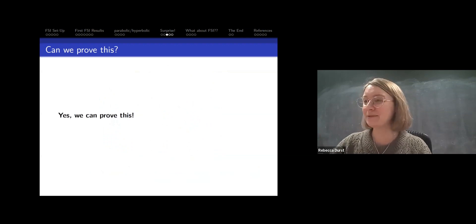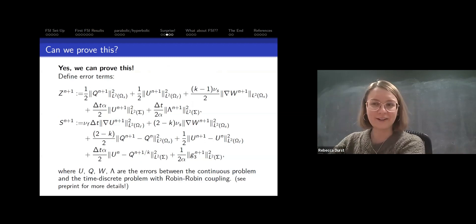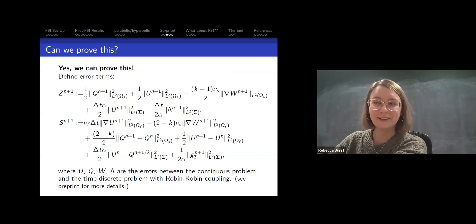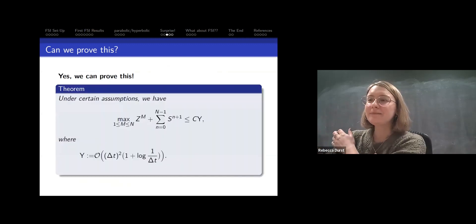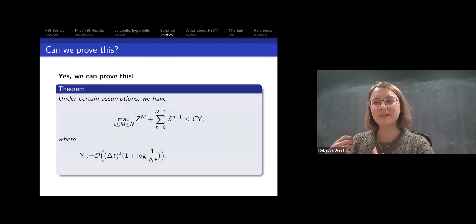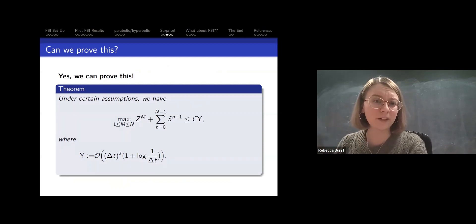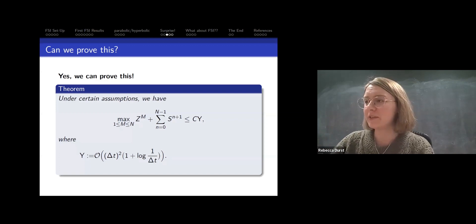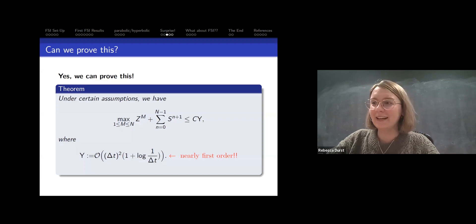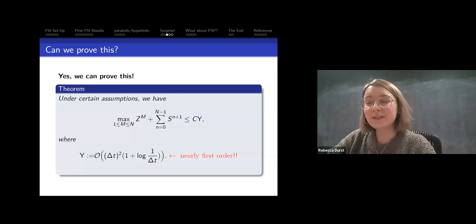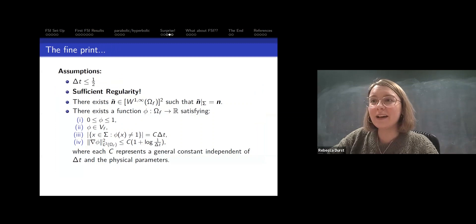We proved it. The scheme converges at order Δt · (1 + log(1/Δt)), which is effectively nearly first order in the limit. It wasn't simple to prove — we needed several assumptions: small enough time step, sufficient regularity, and the ability to extend a function from the interface into the interior in a very specific way using a pseudo lifting operator φ.